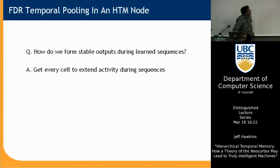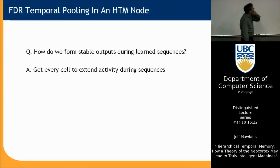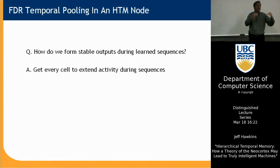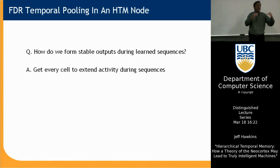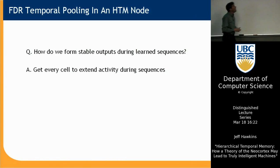Now we're on to the last and hardest part — temporal pooling using sparse distributed nodes. The question is: how do we form stable outputs during learned sequences? The answer is going to be to get every cell to extend its activity during sequences. Every cell in a layer actually projects up to the next region of the cortex, so every cell itself is an output, part of the temporal pooler. This is going to stretch your mind a little bit — I've never been able to get people to really understand this in one presentation.